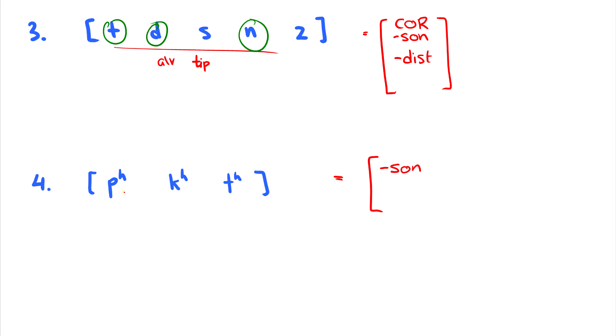Now, pʰ, kʰ, and tʰ. These are aspirated. And which feature makes aspiration? Plus spread glottis. Now, there is an issue here. What's the issue? h is also plus spread glottis, and it's also not a sonorant sound. The question is, how do we get rid of h?